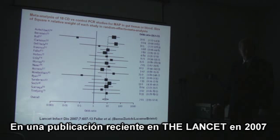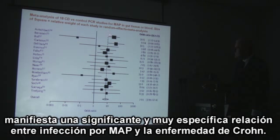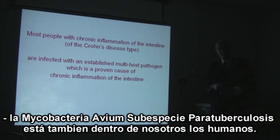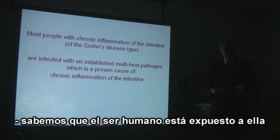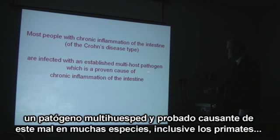In a recent publication in The Lancet, a meta-analysis of many Crohn's disease tests in many laboratories showed a very significant and highly specific association between MAP infection and Crohn's disease. We know that the MAP bug is in our animals, and that human populations are exposed to it. Most people with chronic inflammation of the intestine of the Crohn's disease type are infected with MAP, which is an established multi-host pathogen proved to cause chronic intestinal inflammation in many different species, including primates.